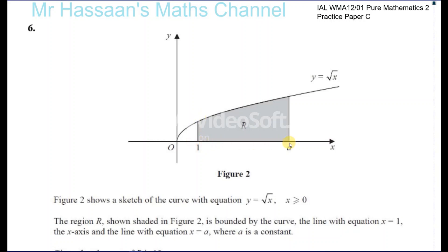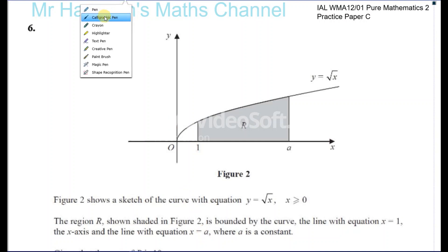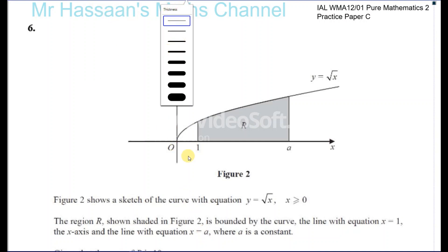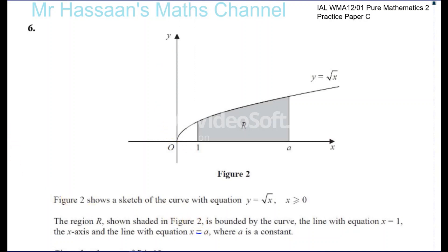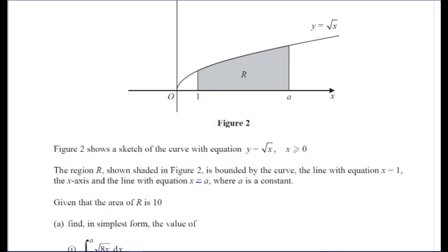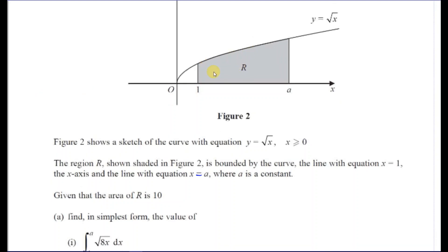And the line with equation x equals A — the print here is quite bad — where A is a constant. Given that the area of R is 10, so we know the area of R is 10 units — all of this region — is 10 units.